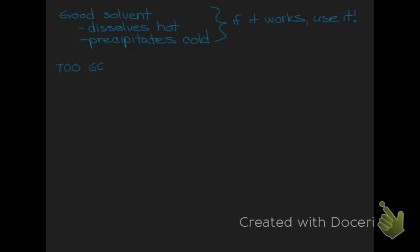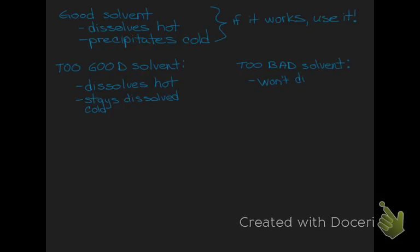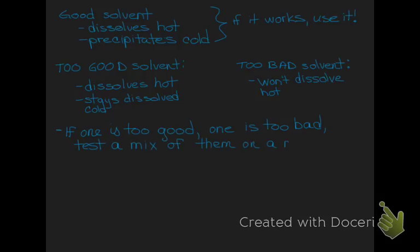However, some of you will find that one solvent is too good — meaning it dissolves the solid both at room temperature and when hot. On the other side, the other solvent may be too bad — meaning it never dissolves the solid whether cool or hot. If that is the case, you'll need to test whether a mixture of the two solvents will work. We'll run this on a small scale first to make sure it works, and if it does, you'll use the mixed solvent recrystallization method.